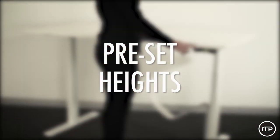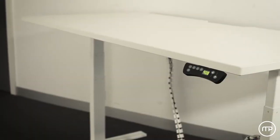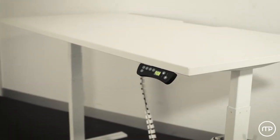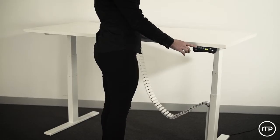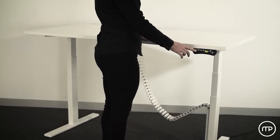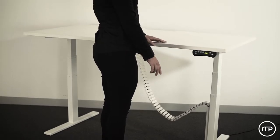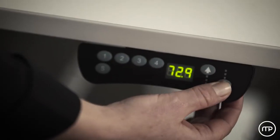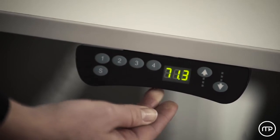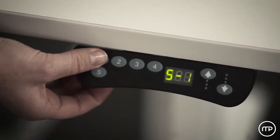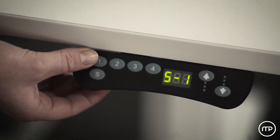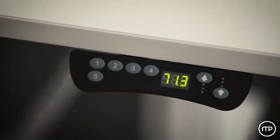Storing and using preset heights: This feature can be used to store up to four set heights into your Ascend Sit-Stand Workstation. This is very useful as it allows easy adjustment from sitting to standing by pressing a single button. Begin by adjusting the worktop to the desired height for the preset. Press the S button followed by one of the numbered preset buttons. Your preset height is now stored under this number.